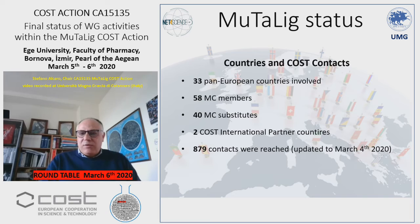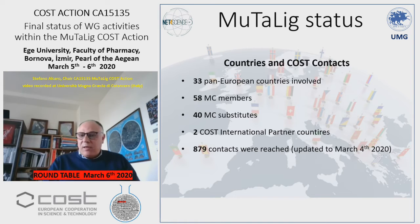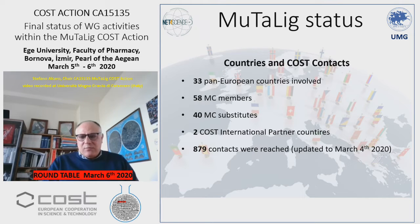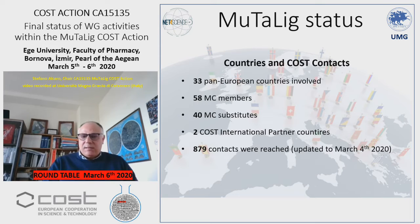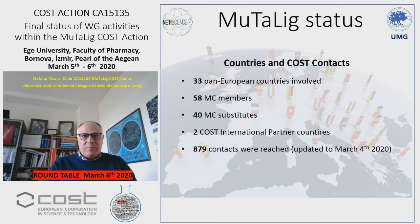We start with the MUTUAL status. Here we have some interesting numbers. We have involved 33 pan-European countries. We have 58 MC members, 40 MC substitutes, and two COST international partner countries. Globally, we arrive at about 900 contacts that include the members, substitutes, the COST international partners, but also all participants that have been involved as speakers, as trainees, as simple participants to our meetings or networking tools.